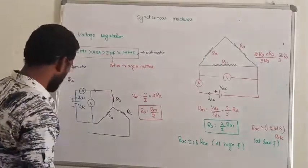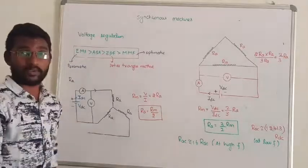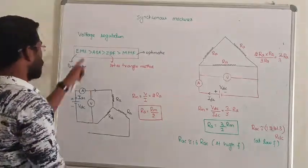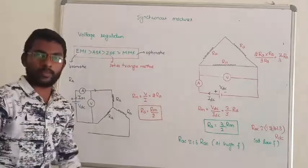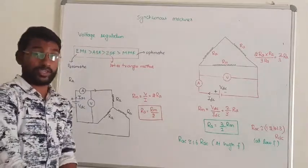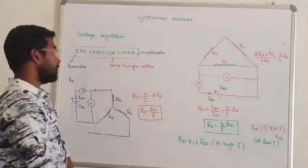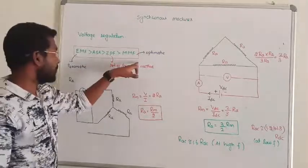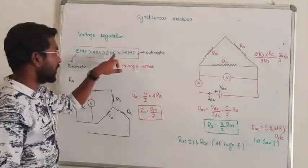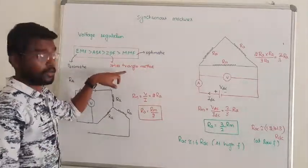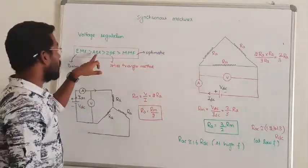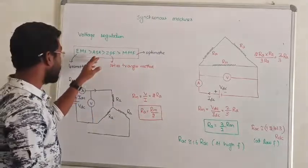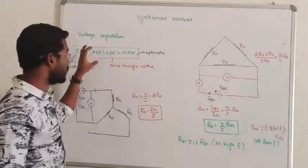Next, we are going to look at voltage regulation methods. In the old voltage regulation methods, we measure the armature resistance using methods like EMF method, MMF method, ZPF, and ASA method — that is the American Standard Association method.